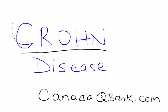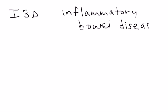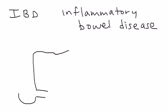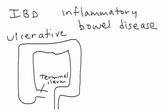Crohn's disease is a form of IBD, which is inflammatory bowel disease. There are two kinds of IBD: Crohn's disease and ulcerative colitis. To illustrate a fundamental difference between the two, consider a diagram of the bowel. This part here is the terminal ileum, and what comes afterwards is the large intestine. In ulcerative colitis, the inflammation is continuous, going all the way down to the rectum.